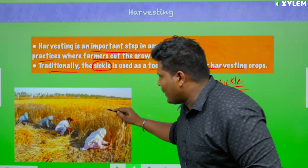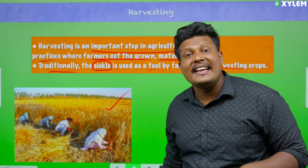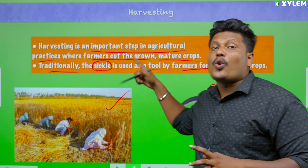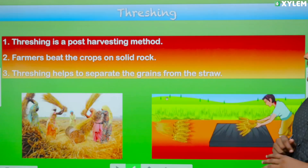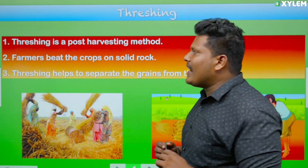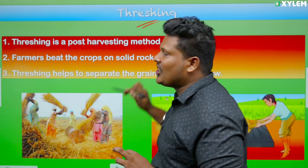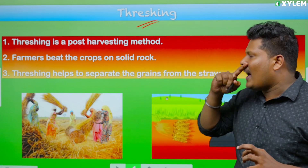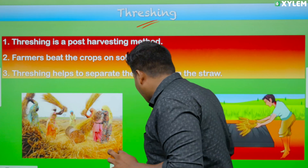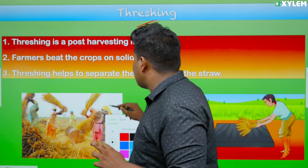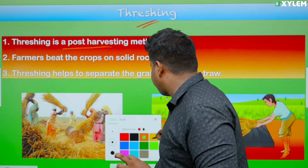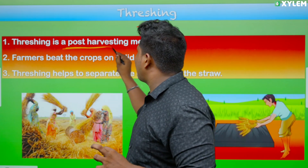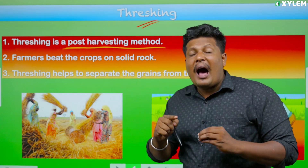This is harvesting. So, it's called harvesting. Now, we're going to move to the next step — threshing. It's a post-harvesting method. Post-harvesting method.